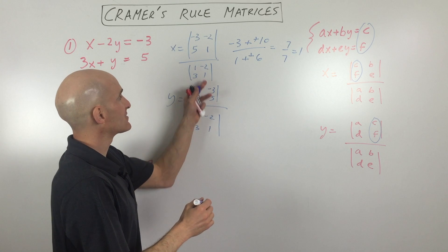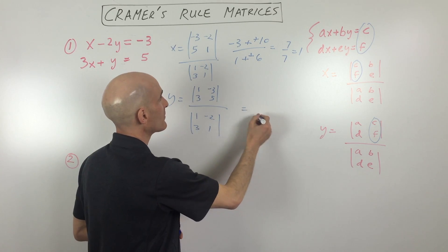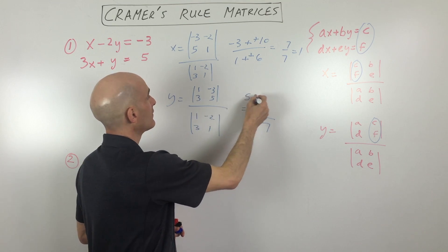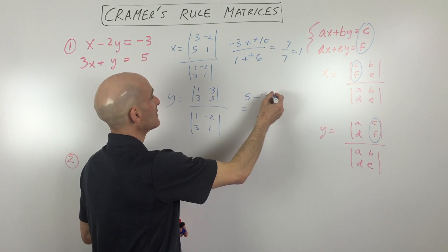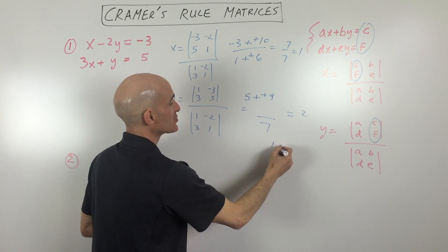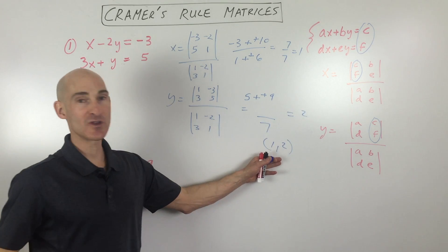Now the denominator here is going to be the same as the denominator here. So we can save a little bit of work by just saying this is seven. But the numerator is going to be five minus negative nine, which is 14 divided by seven, which is two. So the solution to this system is going to be one comma